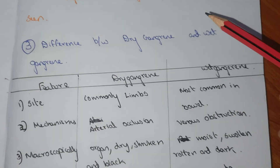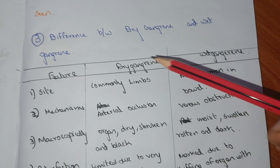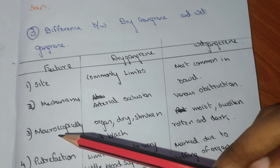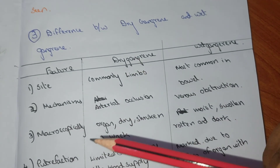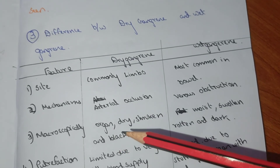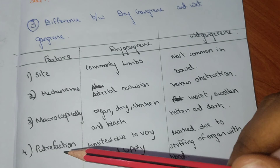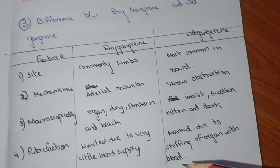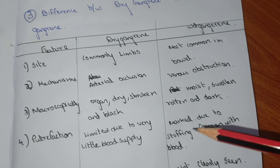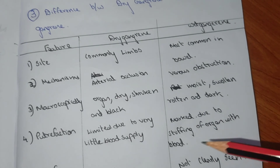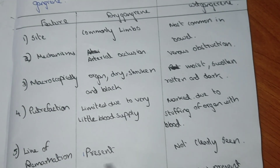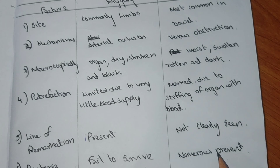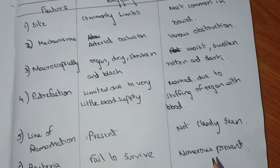Comparing dry and wet gangrene: dry gangrene commonly occurs in limbs; wet gangrene mostly in the bowel. The mechanism is arterial occlusion for dry and venous obstruction for wet. Macroscopically, dry gangrene looks dry, shrunken, and black, while wet gangrene is moist, swollen, rotten, and dark. Putrefaction is limited in dry gangrene but prominent in wet gangrene due to engorgement of the organ with blood. A line of demarcation is present in dry gangrene but not clearly seen in wet gangrene. Bacteria fail to survive in dry gangrene but are numerous in wet gangrene.